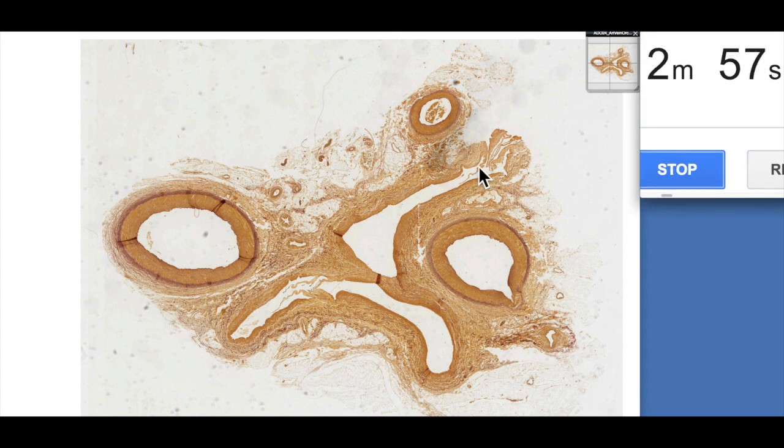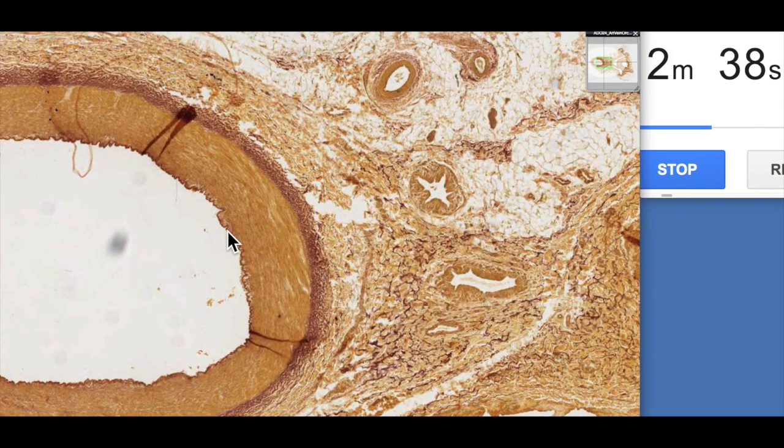Okay, so we've already looked at the elastic arteries. We know that the tunica media is the major component of the wall of the elastic arteries. Muscular arteries are much the same, with the exception being that there's less elastic lamellae and more smooth muscle cells. And one of the really characteristic features of a muscular artery is its tunica intima.